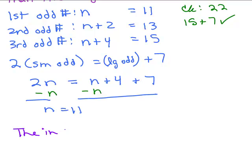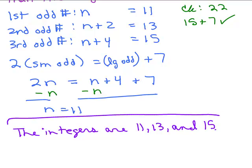And it asks to find the integers. It didn't ask for the smallest or the largest or the middle one. Sometimes that's what it will ask for. Make sure you answer the question. The integers are 11, 13, and 15. We showed all our work. We checked our answer. Awesome.